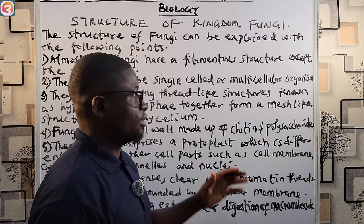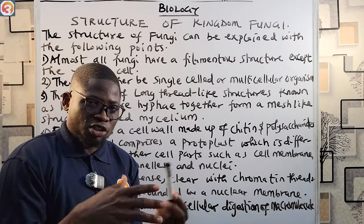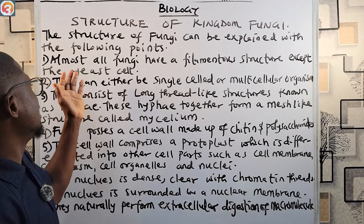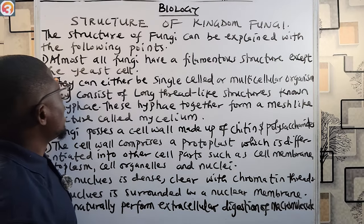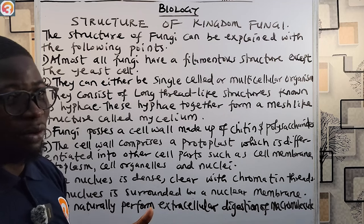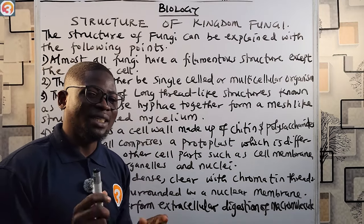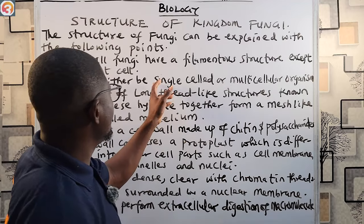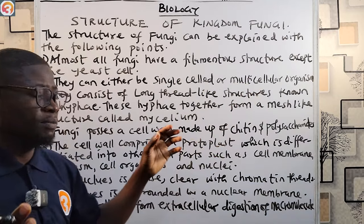The structure of fungi can be explained with the following points. Almost all fungi have a filamentous structure — that is, a thread-like structure — except the yeast cell. The yeast cell is the only unicellular organism in the kingdom fungi, while most other organisms in the kingdom fungi are multicellular. Candida species are also unicellular.